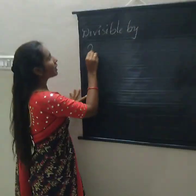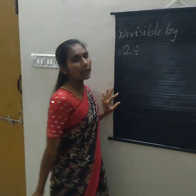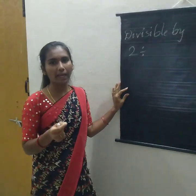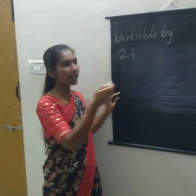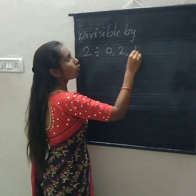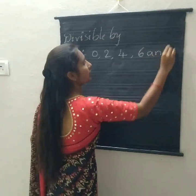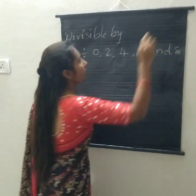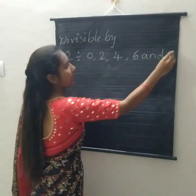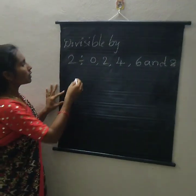First I am explaining the divisibility of 2 rule. The divisibility of 2 rule is the one's place should be 0, 2, 4, 6, or 8. Numbers with these in the one's place are divisible by 2.